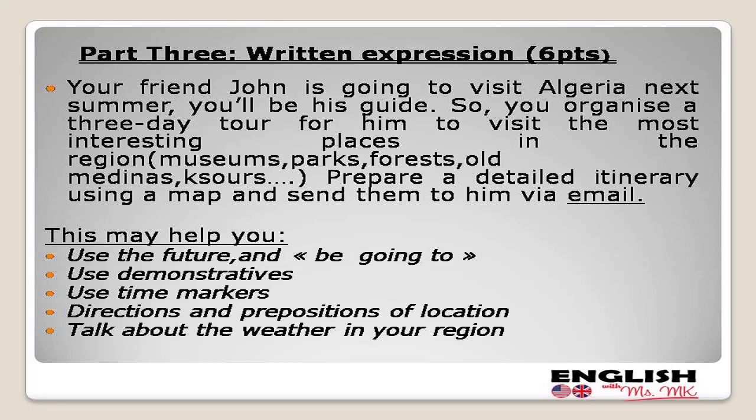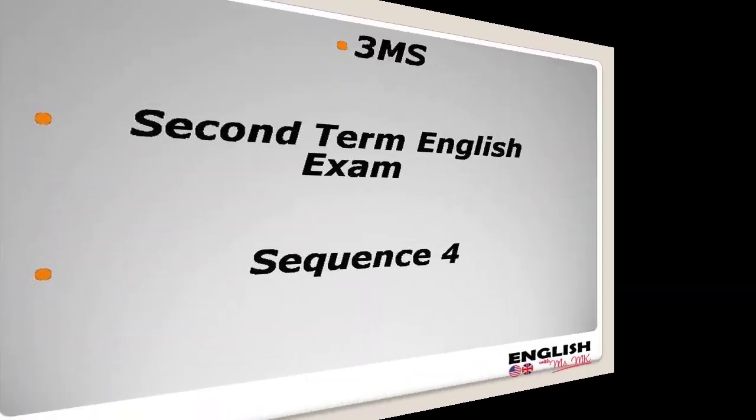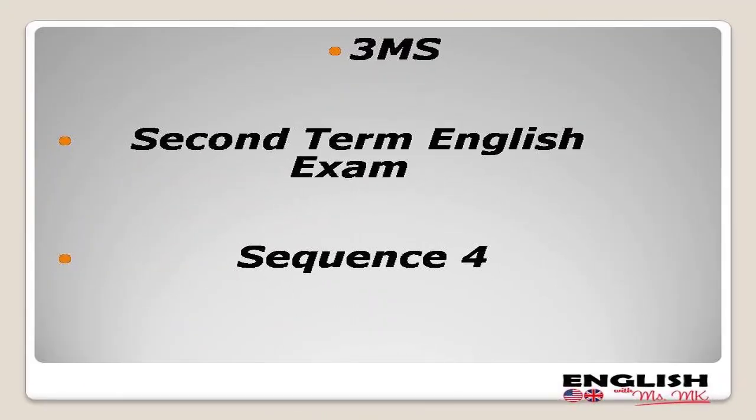In the written expression, I am going to ask pupils to write a detailed itinerary to be sent to a friend who is going to visit Algeria next summer. They will write this itinerary as an email. I'm going to ask them to use the future and 'going to' since it's a future plan, use demonstratives, time markers, directions and prepositions of location, and talk about the weather in their region. This way I think I was fair in including the lessons of the fourth sequence and the added lessons.